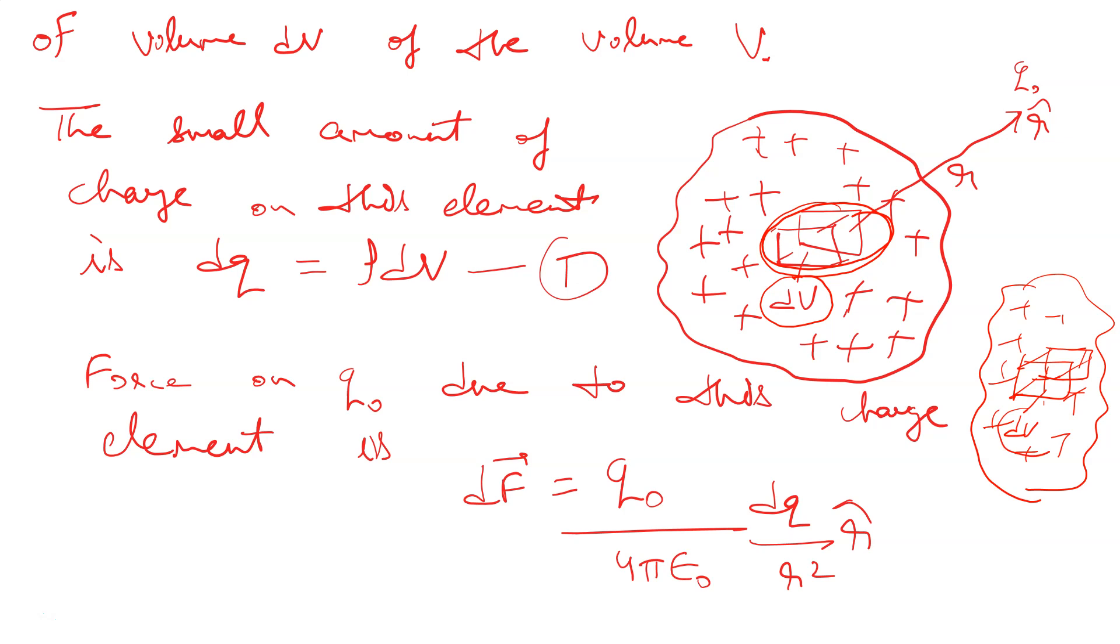The small amount of charge on this element is given by dq equals rho dv, where rho is the volume charge density. This is equation number one.